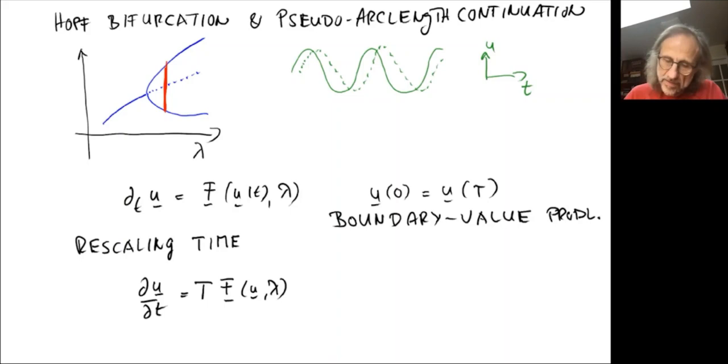So imagine now, we go from one parameter value here, we now increase the parameter, going from here to here. And then the solution might look like this. It may be changing the shape.